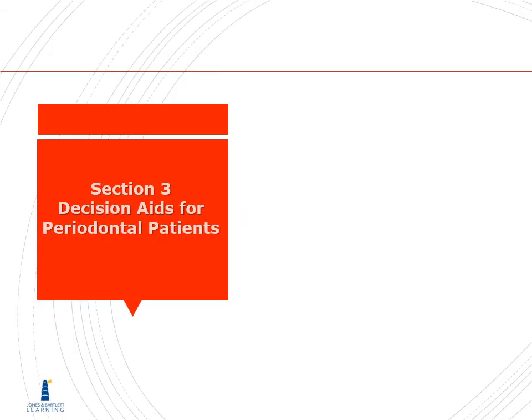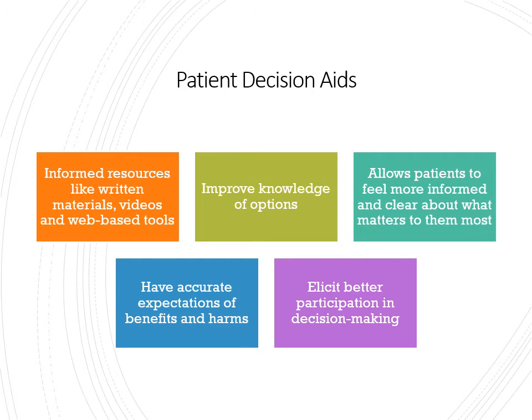Section three is the decision aids for a periodontal patient, on page 210. Decision aids are resources for informed consent — written materials, videos, and web-based tools. These are all types of flyers. In most of your operatories there are flip charts with diagrams and images that you can show your patient to help reinforce concepts that you might have a hard time describing without images. Also use their x-rays.